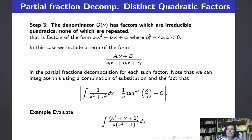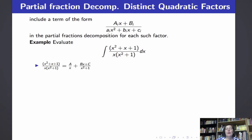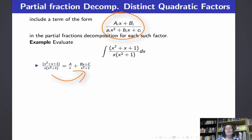Let's look at an example: integrate (x² + x + 1) over x(x² + 1). This is a proper rational function with two irreducible factors in the denominator, namely x and x² + 1. Our first step is to find the partial fractions decomposition. We treat the linear factor x as before, including the term A/x, and for the irreducible quadratic x² + 1 we include a term of the form (Bx + C) over (x² + 1).